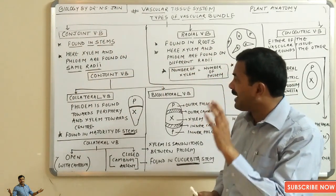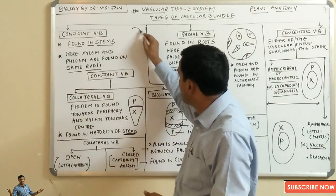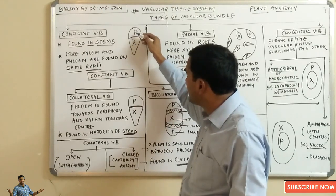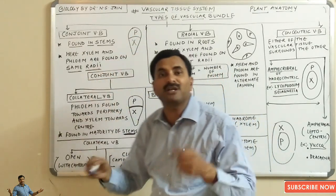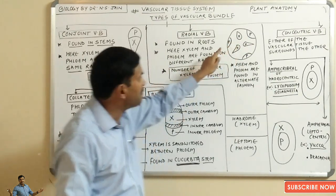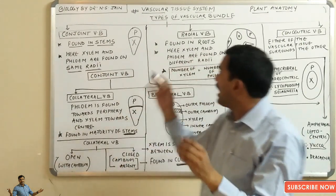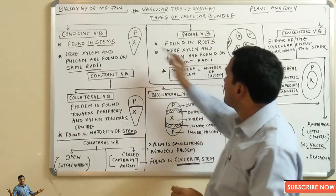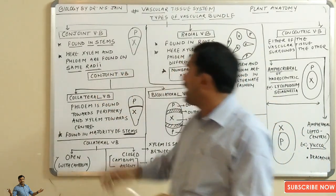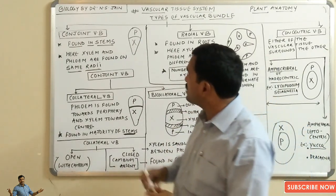Now let's look at the conjoint vascular bundle. Conjoint means that the xylem and the phloem are found on the same radii — they are not found on different radii. In a conjoint vascular bundle, the phloem and xylem are on the same radii. In the case of roots, xylem and phloem are present on different radii, making them radial vascular bundles, but in conjoint vascular bundles they are found together on the same radii.